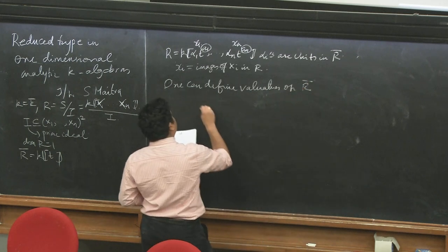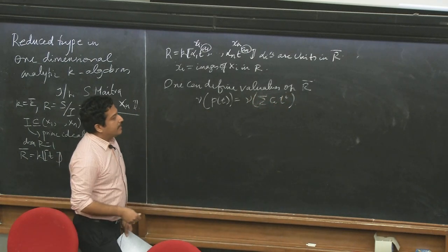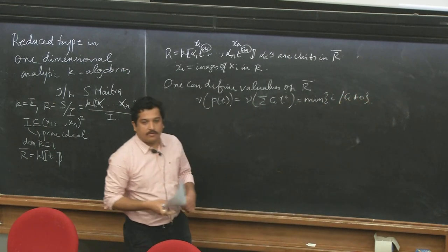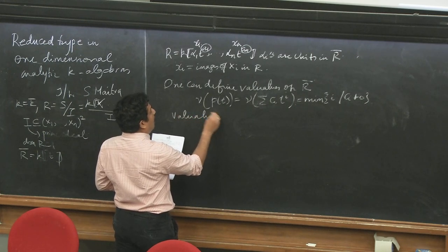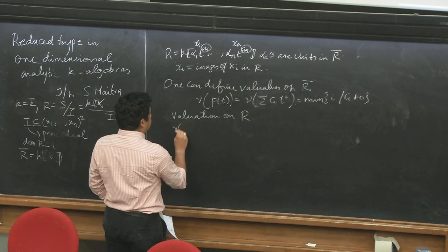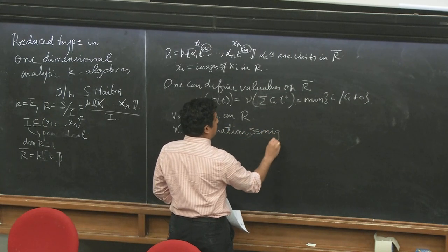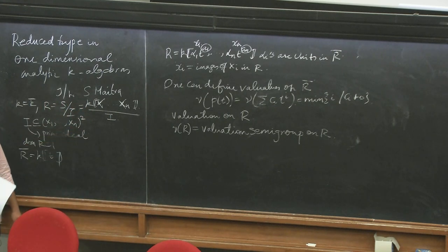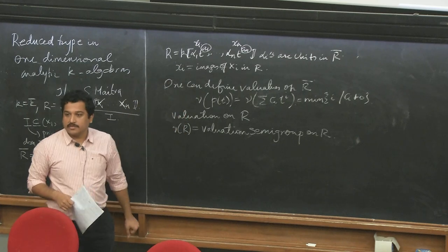You can define valuations on R. On R-bar, I follow: the valuation of a power series sum of c_i t^i is the minimum among all the i's such that c_i is not zero — the standard order valuation. This induces a valuation on R as well, giving you a valuation semigroup V(R).